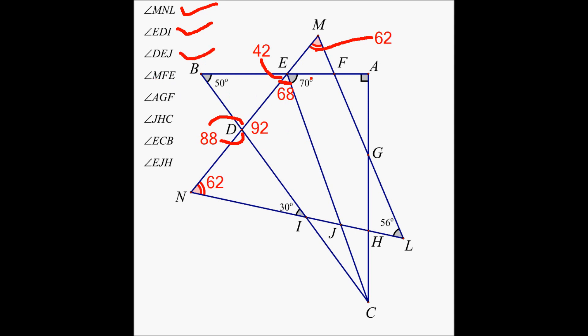Now we need to find angle MFE. I can't get to it directly, but if I know this angle is 62 and this angle is 42 — vertical angle — then from 180, if I subtract 62 and then 42, that's 62 plus 42 equals 104, and 180 minus 104 is 76. So this has to be 76.